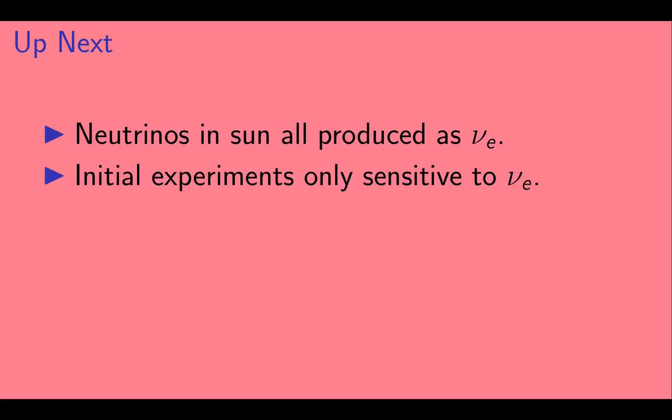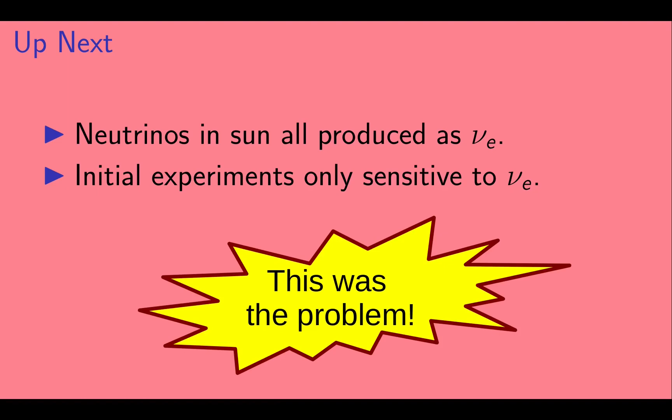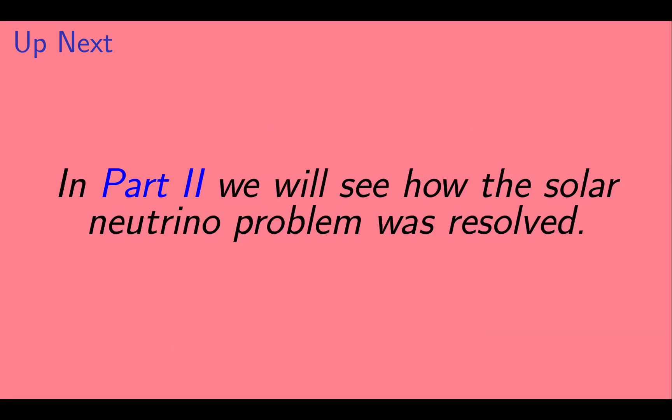And the initial experiments to measure the solar neutrino flux were only sensitive to electron neutrinos. While this seems reasonable, we'll see in the next part that this actually was the problem. In Part 2, we'll see how the solar neutrino problem was resolved.